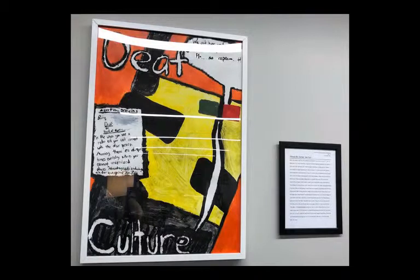The painting is titled Communication Breakdown. It is an abstract piece with orange, yellow, black, green, and red on the canvas. Inside the canvas, there is a callout at the top right that says: We can't hear you. Please repeat. In addition, there is text about the drawing written on the painting that says: Being deaf or hard of hearing is like when you use a radio and can't connect with the other person, meaning there are always times every day when you cannot understand others. Advantages and disadvantages are for everyone. — Ian Lex.